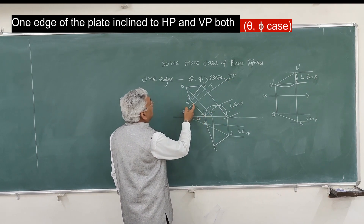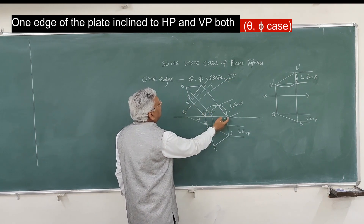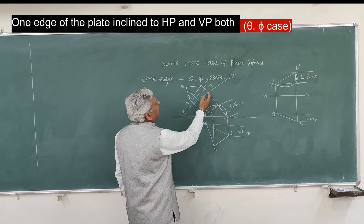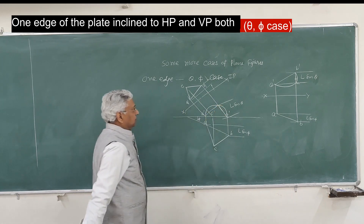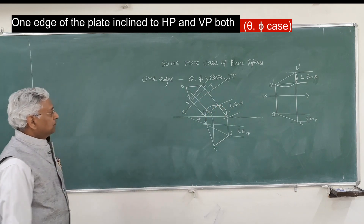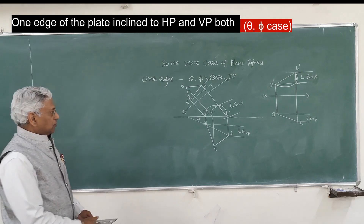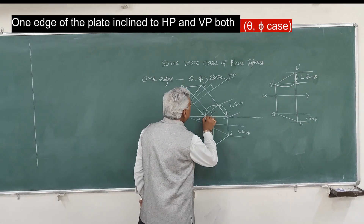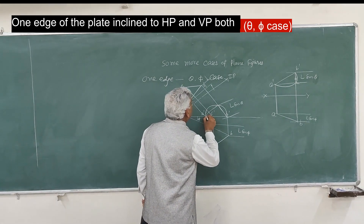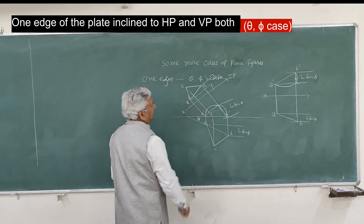The height of A and the height of B give a difference of L·sin(theta) with respect to the ground line. So that is the elevation and this is the plan.